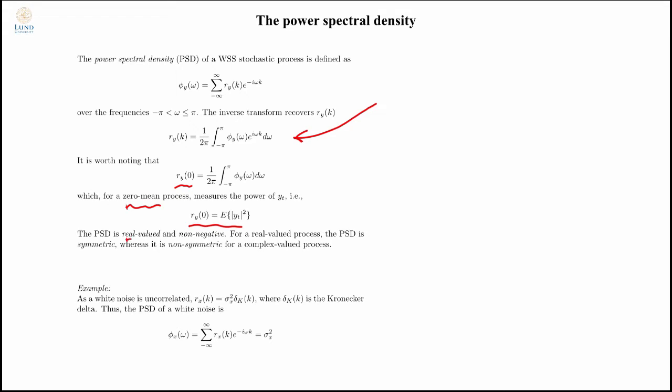The power spectral density is a real valued function and it's non-negative. The power spectral density will never be negative. For a real valued process, the power spectral density is symmetric, meaning I should expect it to look something like this, whereas if I have complex data I will have a non-symmetric spectrum.